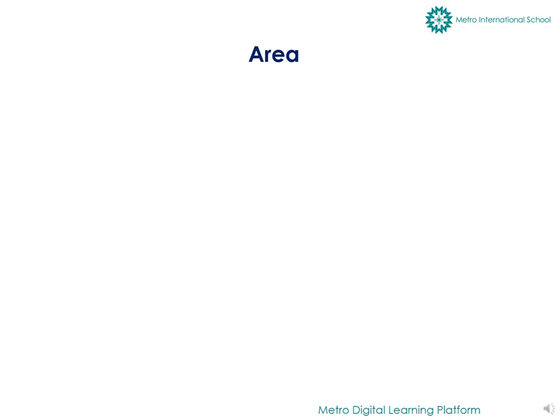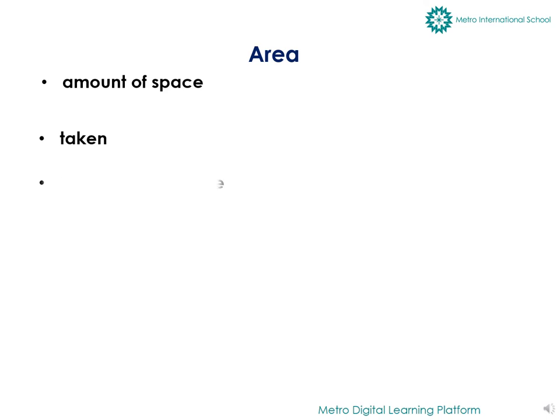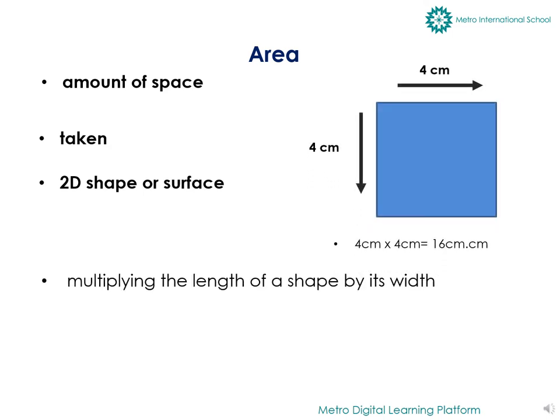Area is the term used to define the amount of space taken up by a 2D shape or any surface. Area is calculated by multiplying the length of a shape by its width. This is the formula we use to calculate area: length multiplied by its width.